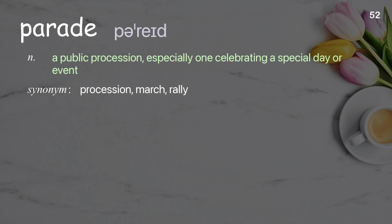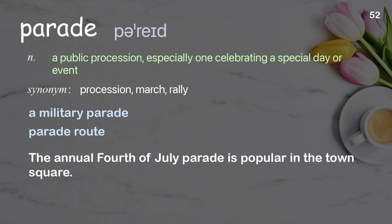Parade — a public procession, especially one celebrating a special day or event. Examples: a military parade, parade route. The annual 4th of July parade is popular in the town square.